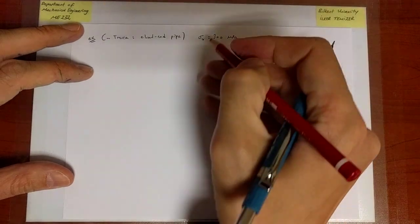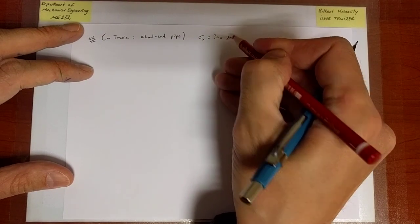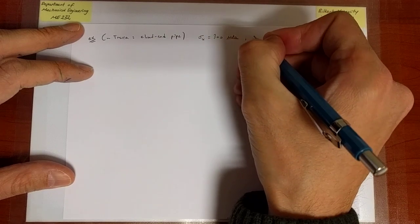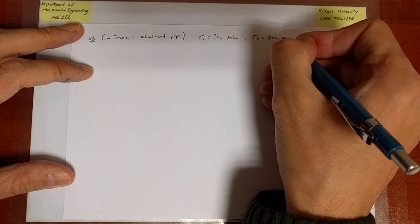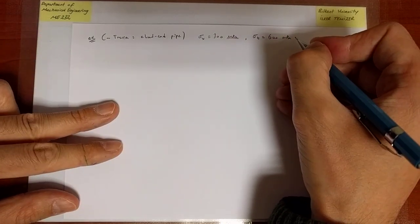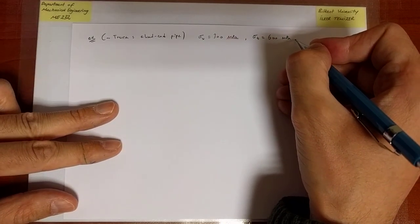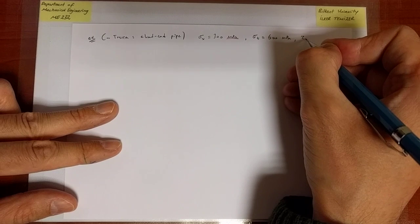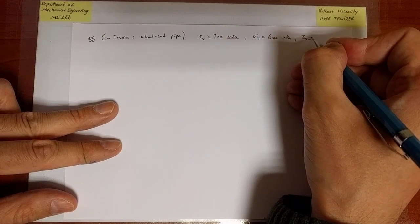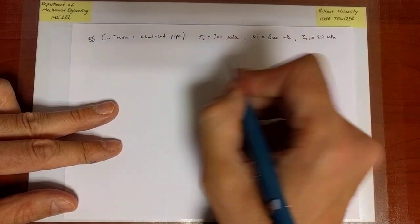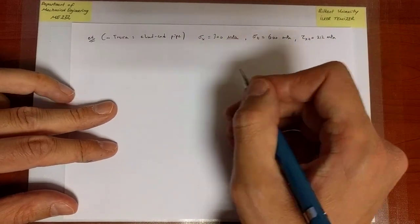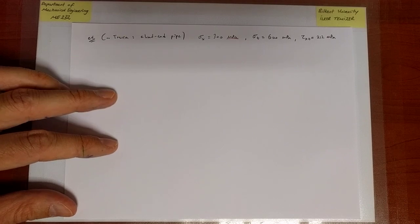That is the unit I'm going to employ. I'm not going to write it once again. Sigma tangential equals 600 MPa, and finally we found the shear stress on the plane with normal x in the tangential direction equals 212 MPa, and we omitted the third stress so sigma_3 equals zero.